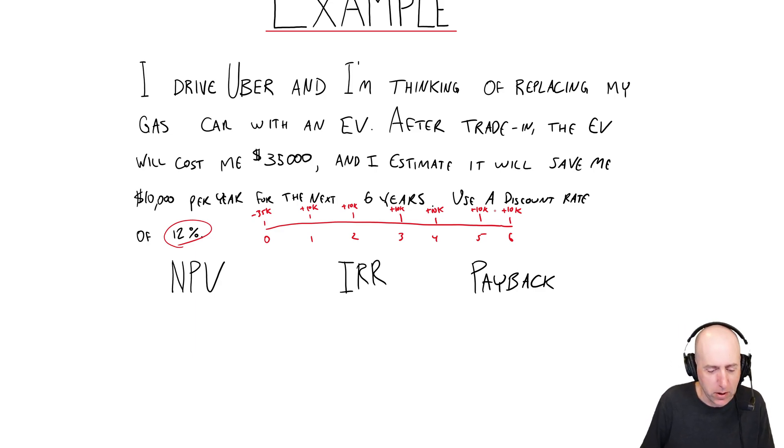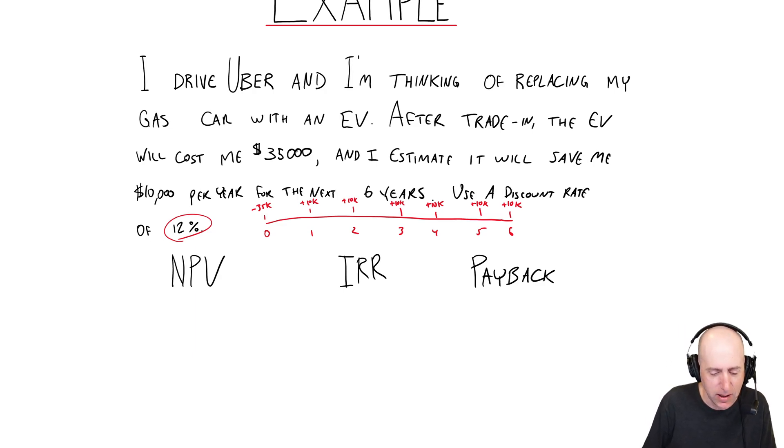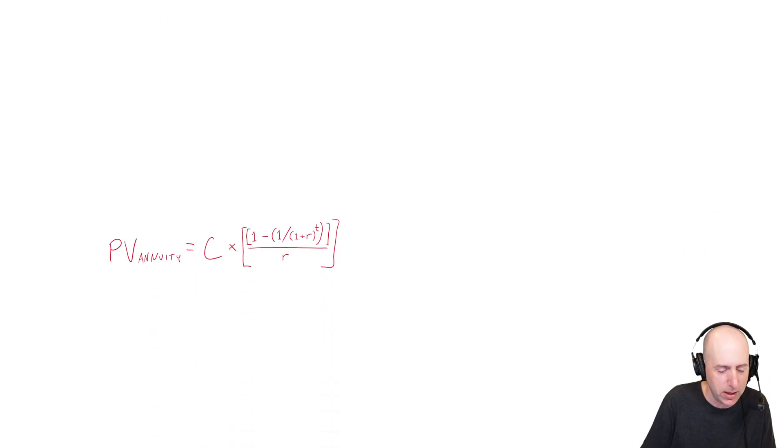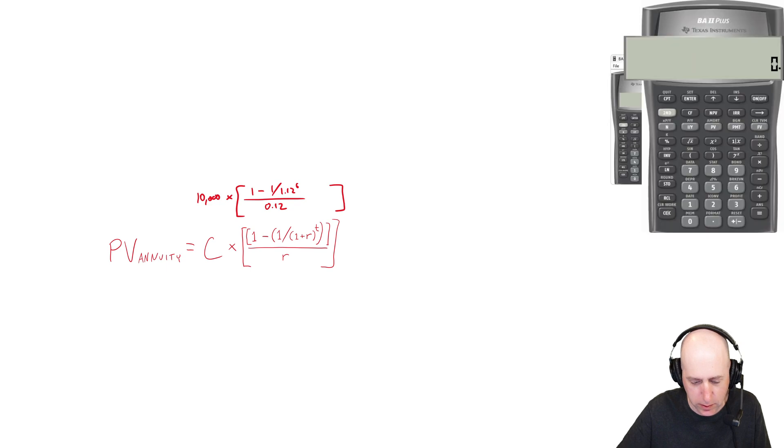I can do it in my financial calculator fairly quickly. I'll do this one by hand, because we'll do some financial calculator work in a second. But let's do the present value of that annuity we've looked at. It is a $10,000 savings. So my C is 10,000. Here's the formula for an annuity. You've seen this before. One minus one over one plus R. So 1.12 to the power of six, the power of T, all divided by 0.12. All right. So get my calculator out and we'll solve for this.